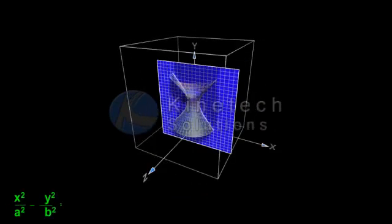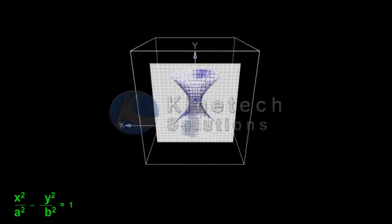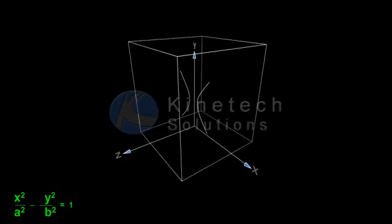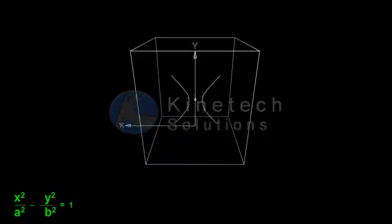Hyperbola: If the plane cuts both halves of the cone but does not pass through the vertex, the curve is a hyperbola.